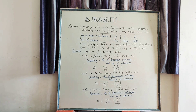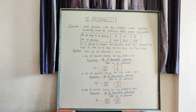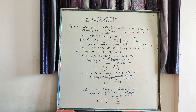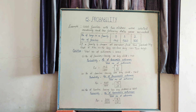Good morning. First today let's have a quick recap of what we have learned in the previous lecture. We saw what do you mean by probability. Probability means an extent to which an event is likely to occur, or in other words, probability is a measure of likelihood of an event happening.